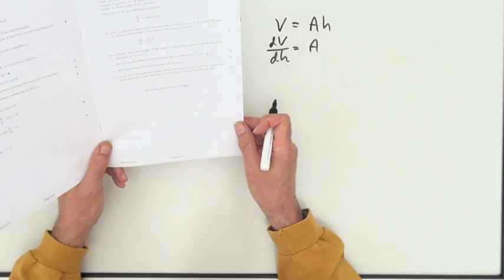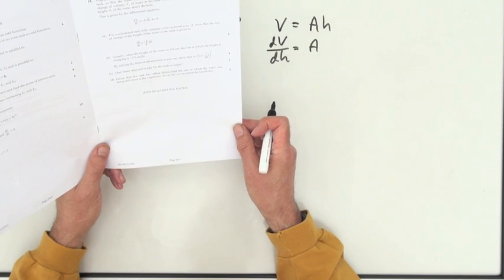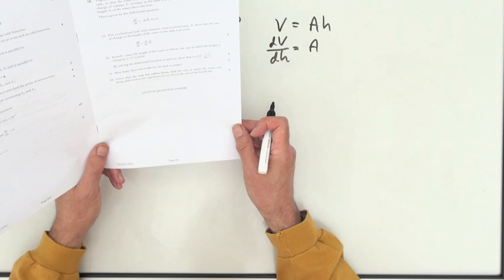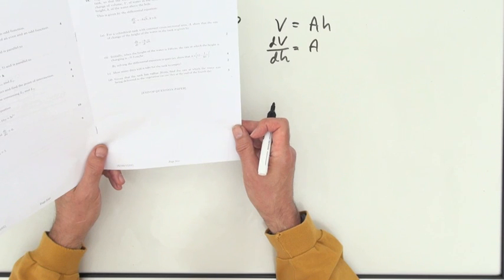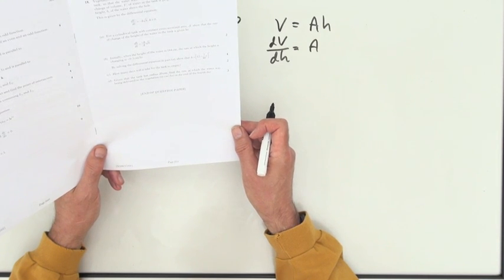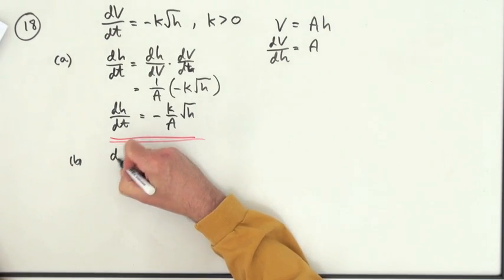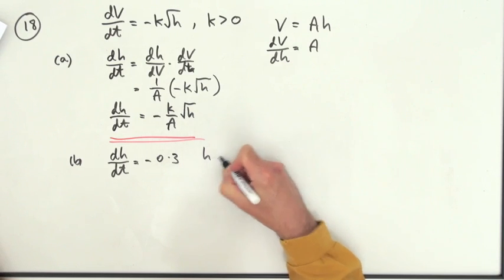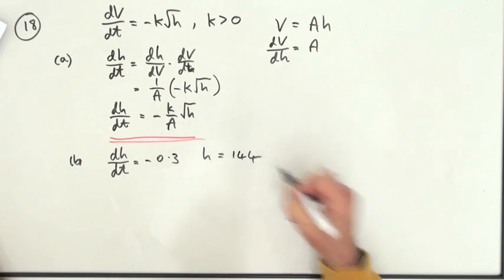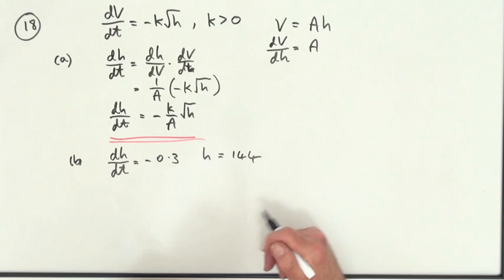Part B. Then it gives us some values here. It says, initially, when the height of the water is 144, the rate at which the height is changing is negative 0.3 centimetres per hour. So dH by dT is negative 0.3 when H is 144. That means we could pop it into this and find a value for K.